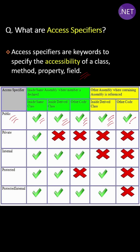In an upcoming question I will explain the internal keyword separately. A private method is accessible within the same class only — nowhere else. Internal is accessible within the same assembly.